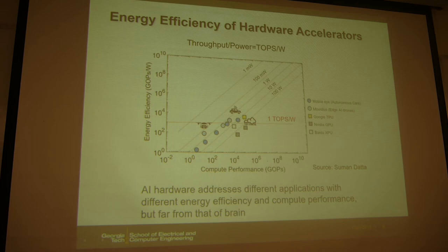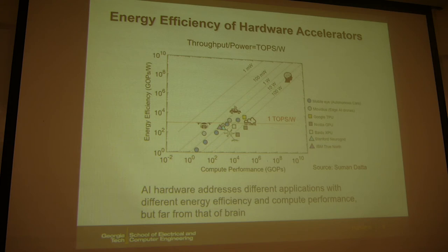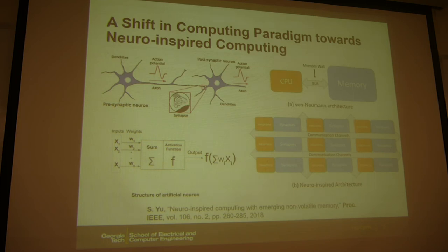A student asks why TPU has better energy efficiency — we will discuss TPU shortly in the next few slides. There is a big gap between current chips and the human brain. The human brain consumes about 20 watts, and its equivalent computational efficiency is much higher. So the question is how we can improve the energy efficiency of our hardware to close this gap. We get inspiration from neuroscience and biology.